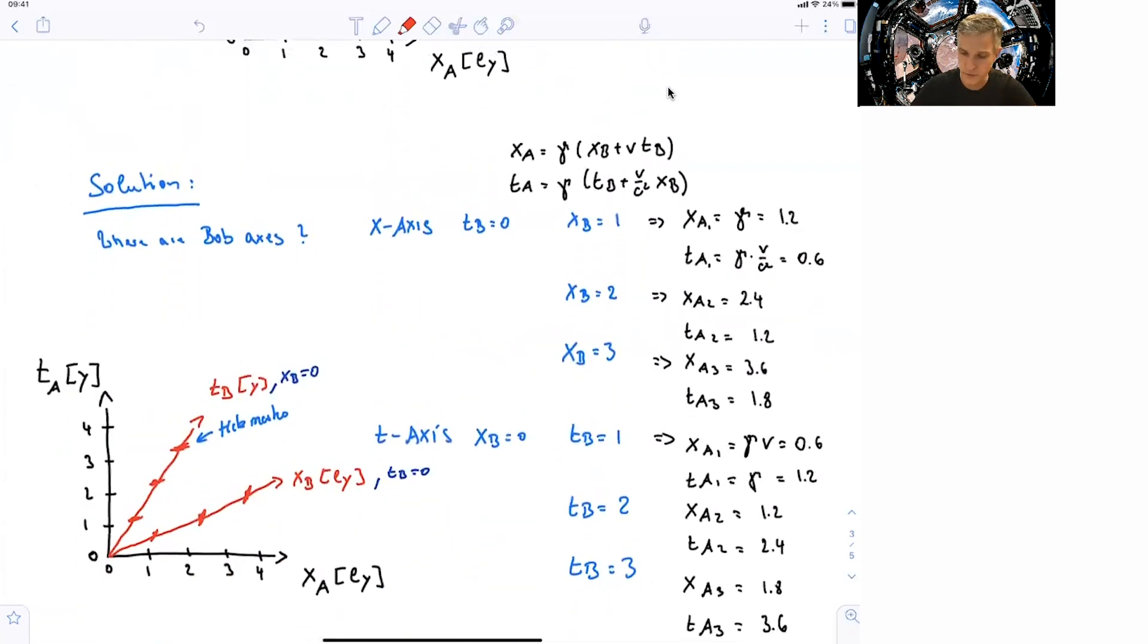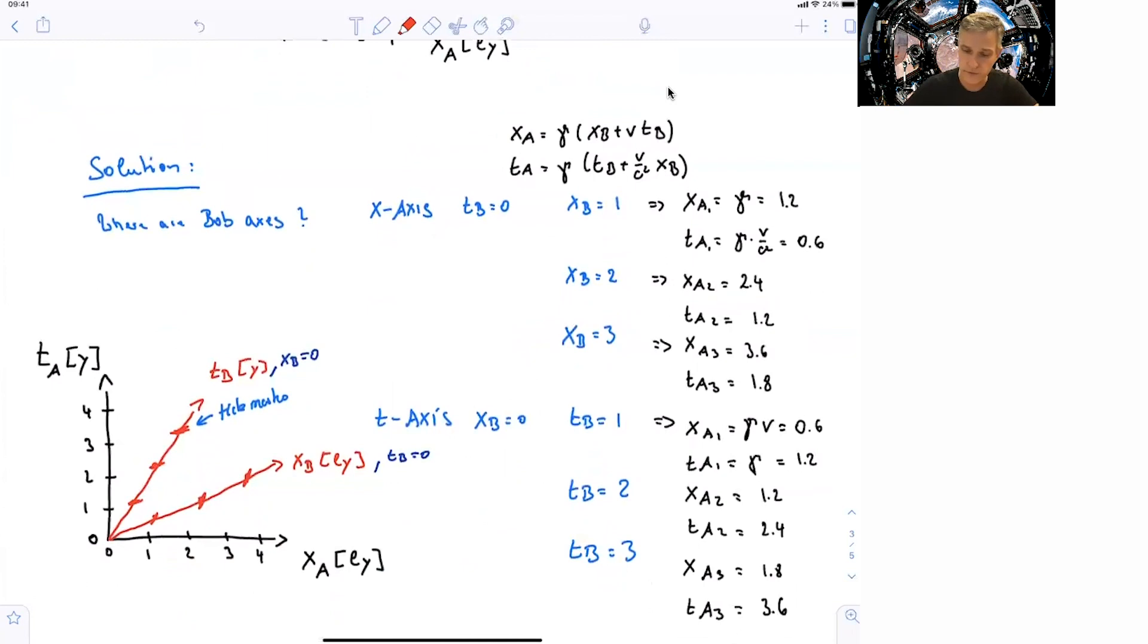OK, so the way to approach this is the following. I want to use Lorentz transformations in order to figure out, what is the value of Bob's time axis and space axis for different values of Alice's space-time diagram. So we start with drawing Alice's space-time diagram, and then if you want to find the x-axis as seen by Bob, we have to set the time for Bob to equal 0, and then find the corresponding elements or tick marks on the axis.